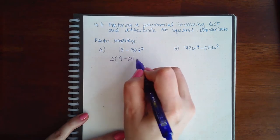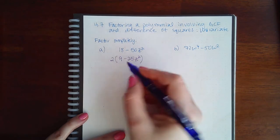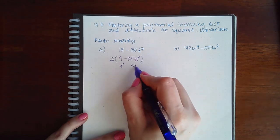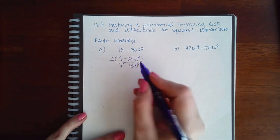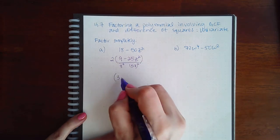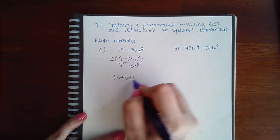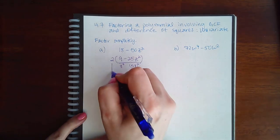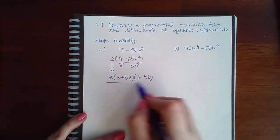This leaves me with 9 minus 25z squared. This is 3 squared and this is 5z squared, so I can factor this in the parentheses into (3 + 5z) and (3 - 5z). But we can't forget about the GCF from the beginning of the problem.